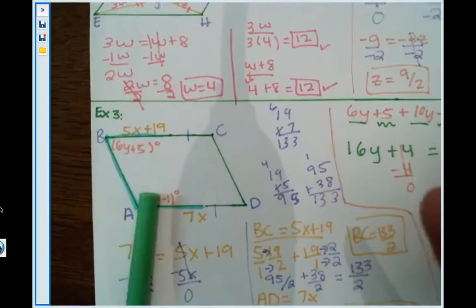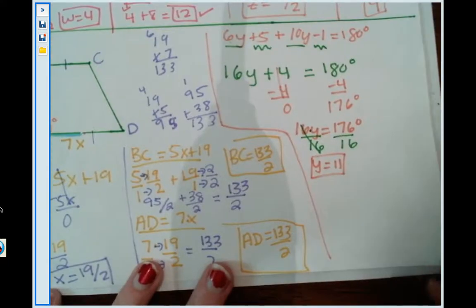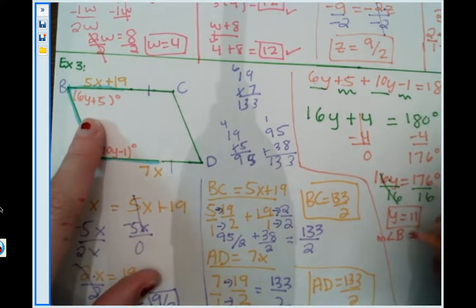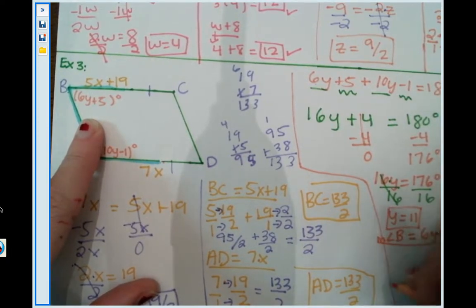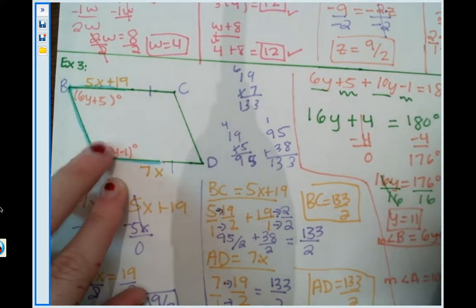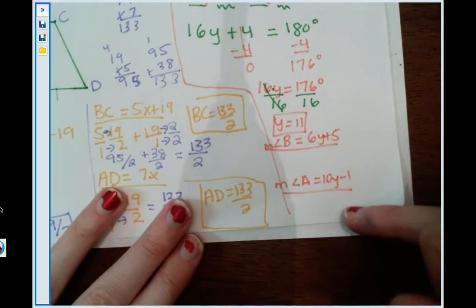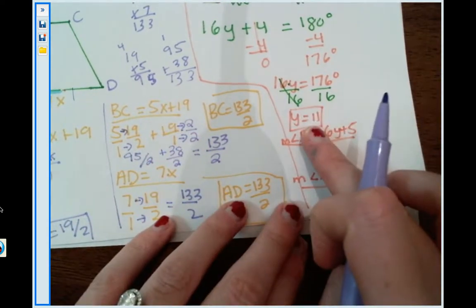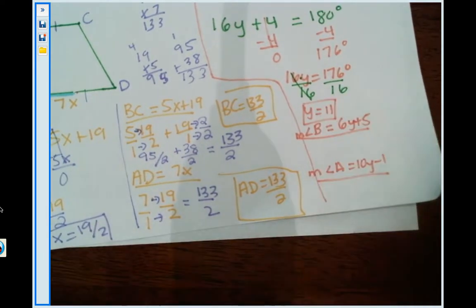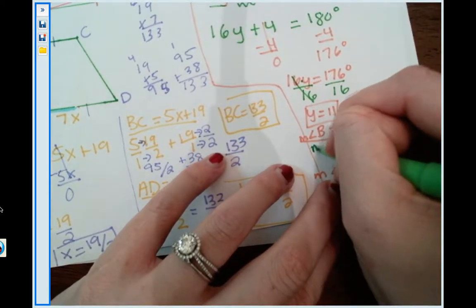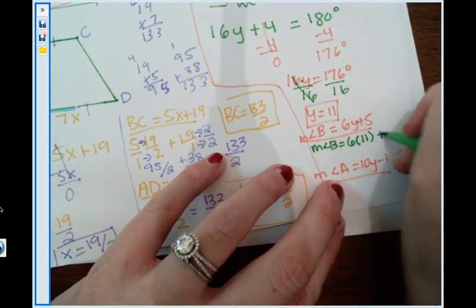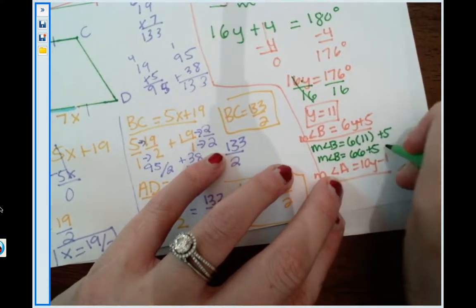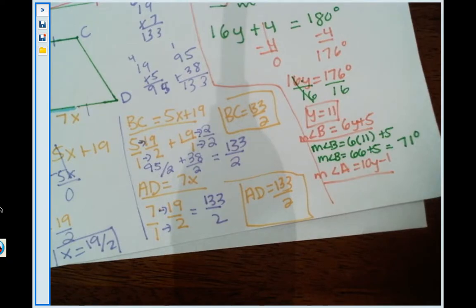But we are not done. We also need to find angle B and angle A, which we don't have fractions, so this won't take this long. So let's solve for angle B, which is the measure of angle B is 6y plus 5. So everywhere I spot a y, I'm going to replace it with an 11. So we have 6 times y, which is 11. So the measure of angle B equals 6 times 11 plus the 5. 6 times 11 is 66. And 66 plus 5 will give me 71 degrees. So the measure of angle B is 71 degrees.